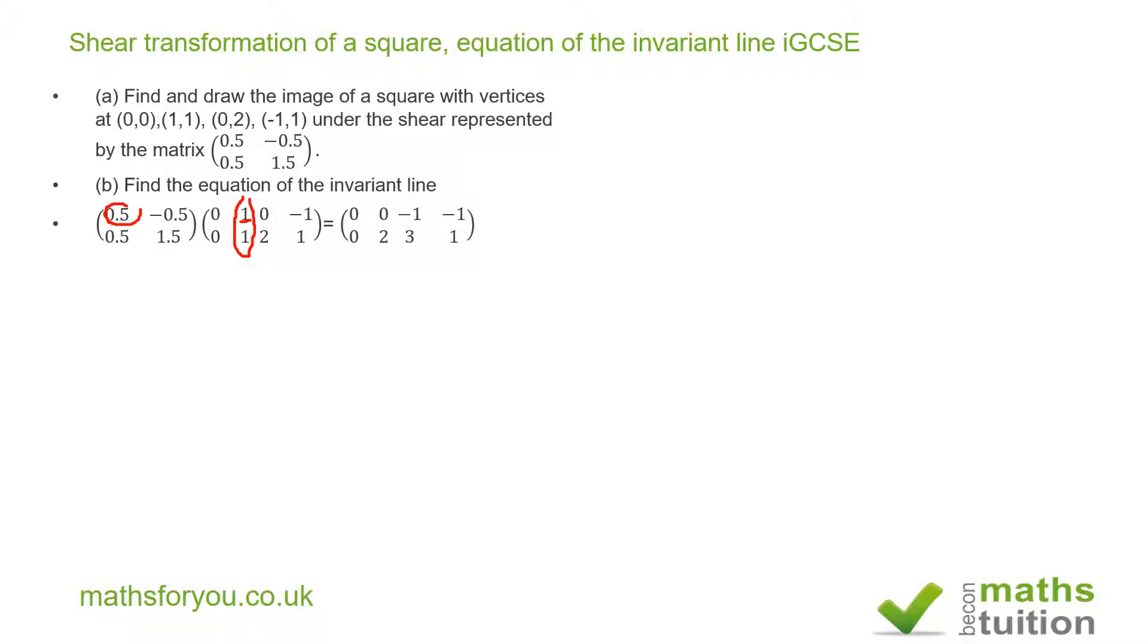For the y, still with the same column, I do 0.5 times 1 plus 1.5 times 1 and I end up with 2. So in effect this set of coordinates maps to that.